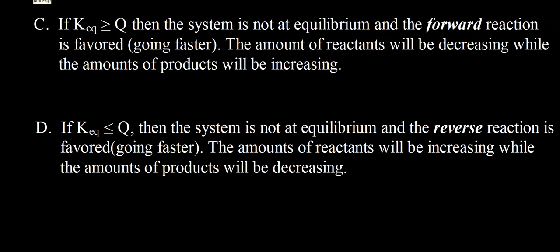If Q is smaller than K, that means the system is not at equilibrium and the forward reaction is favored. So in order for Q to equal K, we need more products. So the amount of reactants will be decreasing while the amount of products will be increasing.